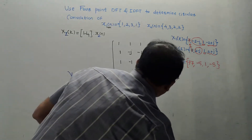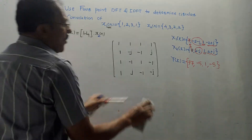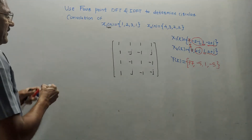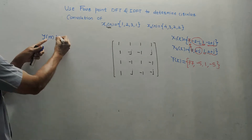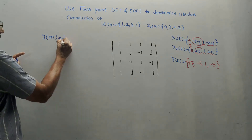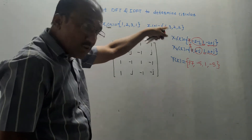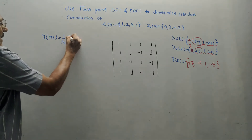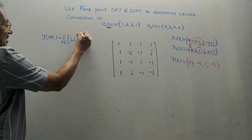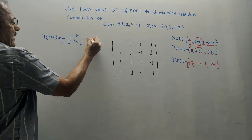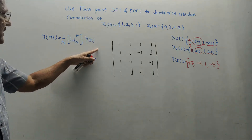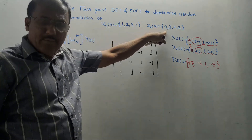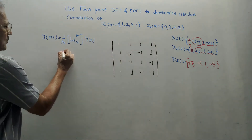Step 3: calculate the IDFT of Y(K). The formula is Y(M) = (1/N) × [WN]* × Y(K), where [WN]* denotes the complex conjugate of the W matrix. N is the number of samples — here N = 4, so the factor is 1/4.